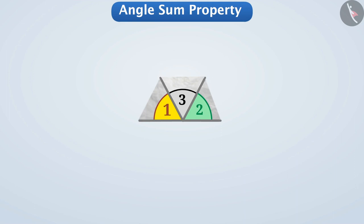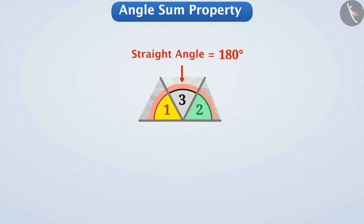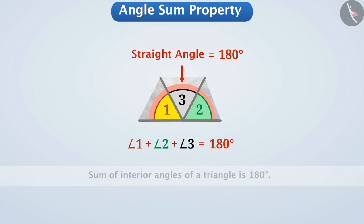Now you can see that angle 1, angle 2, and angle 3 together are forming a straight angle, that is equal to 180 degrees. We can see that angle 1 plus angle 2 plus angle 3 is equal to 180 degrees. That means the sum of the interior angles of a triangle is 180 degrees.